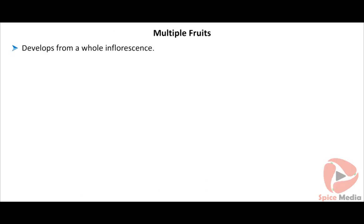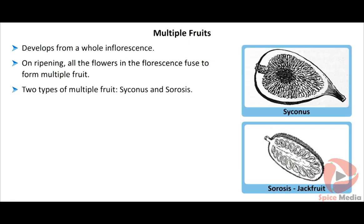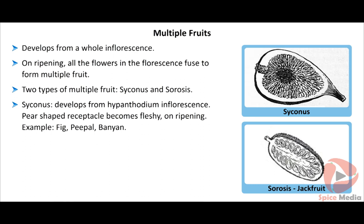A multiple or composite fruit develops from the entire inflorescence. At ripening, all the flowers in the inflorescence fuse to form the multiple fruit. Psychonus and sorosus are the two types of multiple fruit. Psychonus develops from a hypanthodium inflorescence; the pear-shaped receptacle becomes fleshy when ripe and bears achenes on its inner surface. Example: fig, peepal, and banyan.